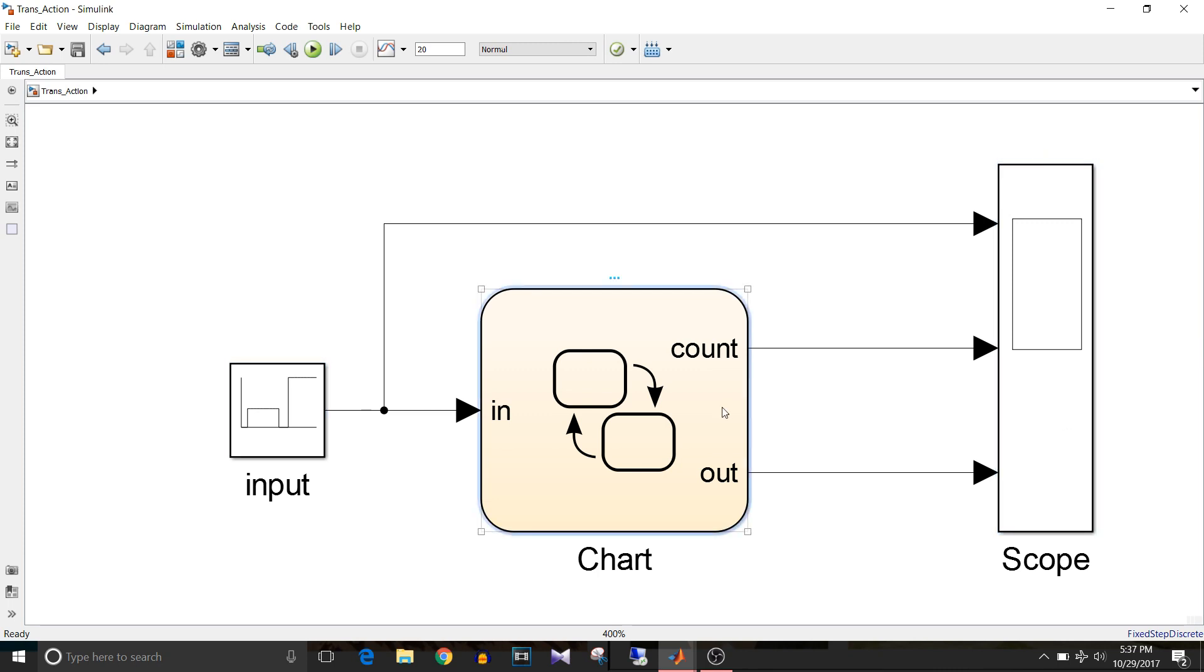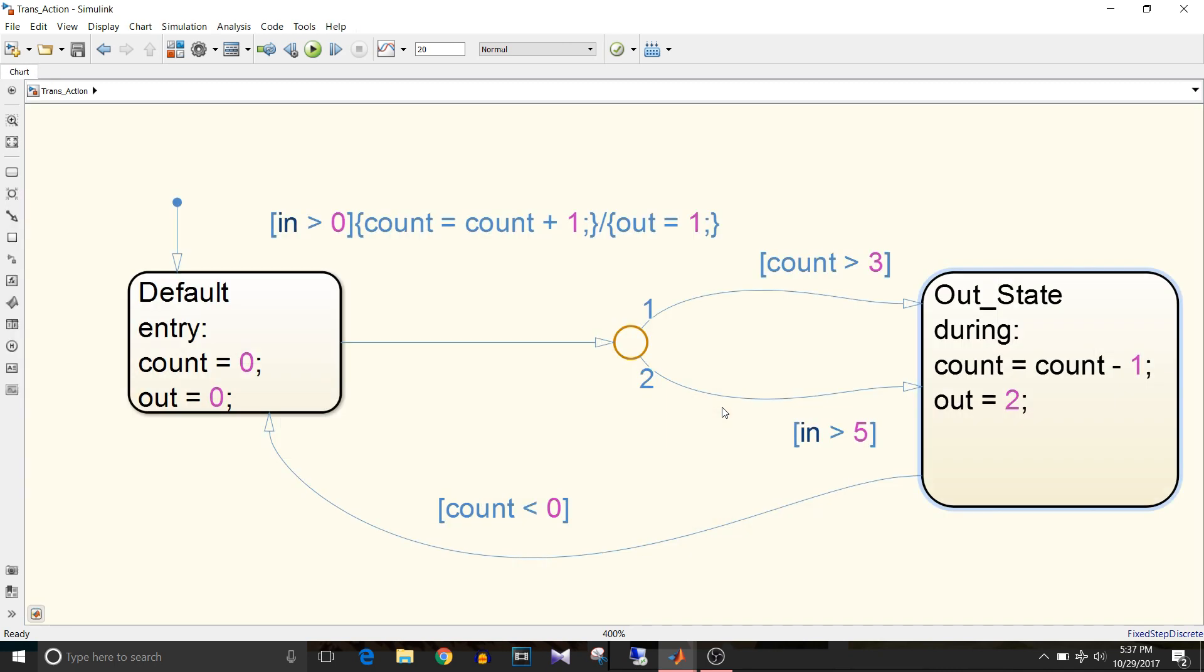In this chart, the logic I have designed will show what is the transition action. Let's go inside this chart and I'll quickly explain the logic. By default, the default state will be active. For this, the entry action will be executed: count equal to 0 and output equal to 0.